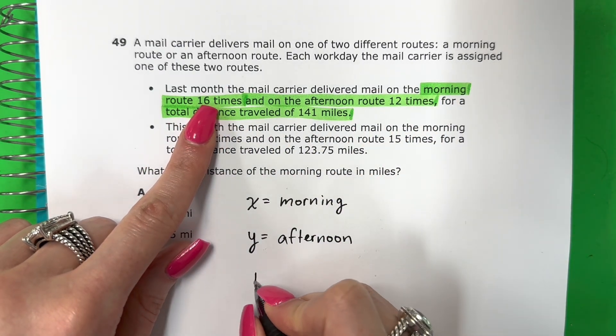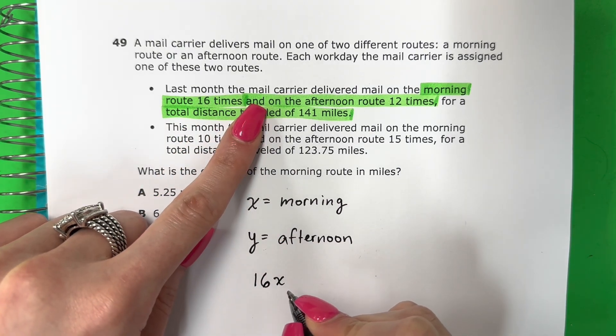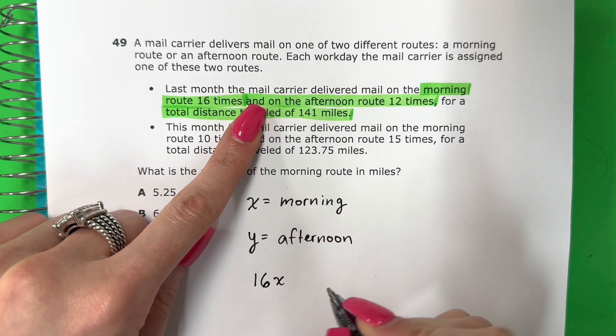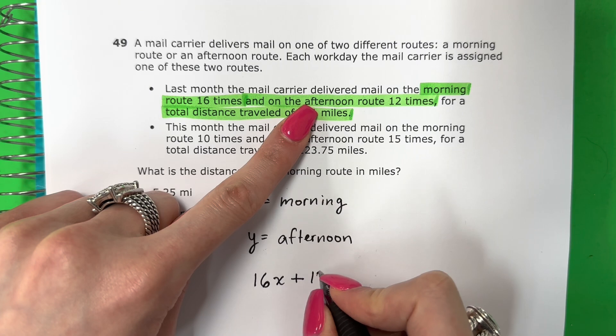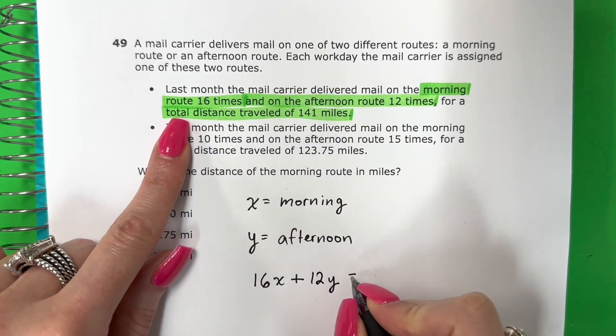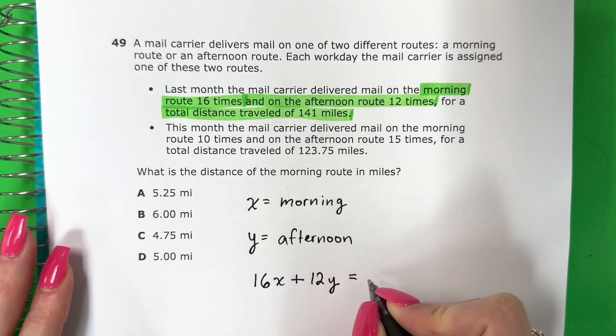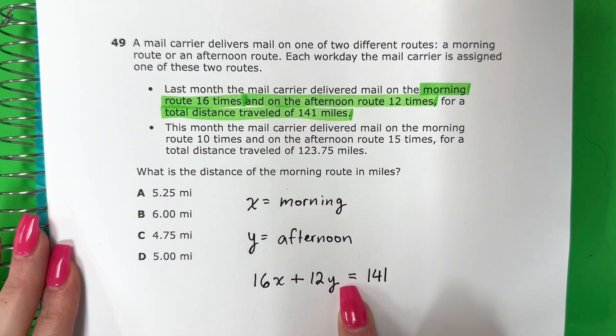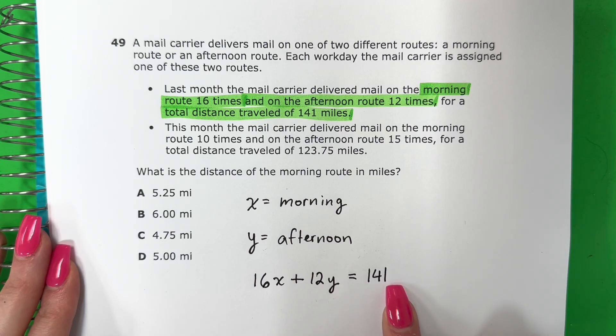So I have morning is 16. La mañana is 16. So 16X. And Y, that means more, significa más, so plus. Afternoon, la tarde, that's Y. So 12Y. Now the total, la total, you always put it on the right. Siempre pongo la total a la derecha. So my total is 141. So you put an equal there. So morning and afternoon is 141 total miles. La mañana y la tarde es 141 en total.